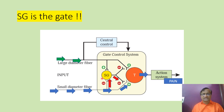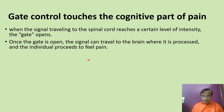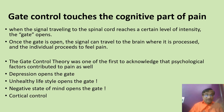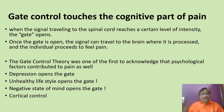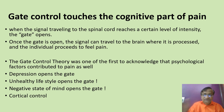The gate closes pain transmission. Gate control theory also touches the cognitive part of the brain — depression opens the gate, unhealthy lifestyle opens the gate, and a negative state of mind opens the gate. Cortical control is involved; if there is an unhealthy lifestyle, it opens the gate. This is the cognitive component of pain in gate control theory.